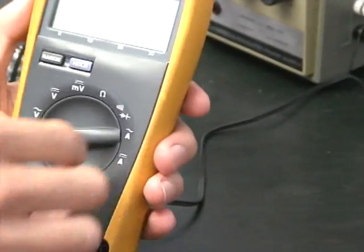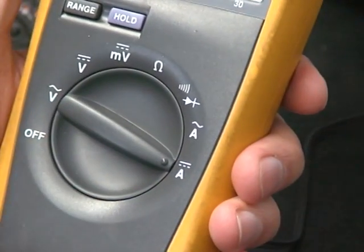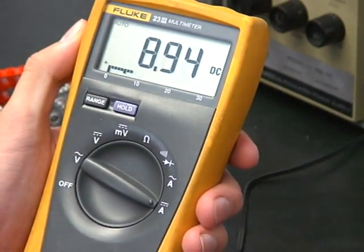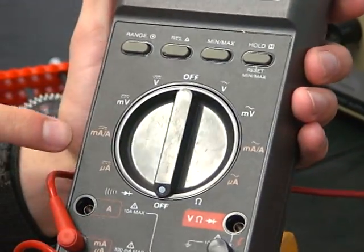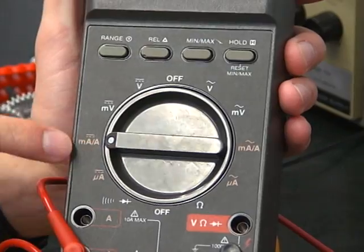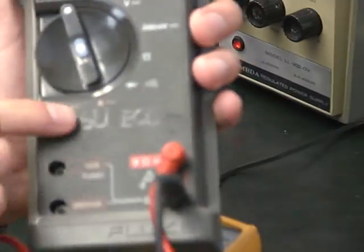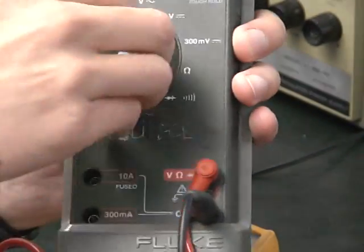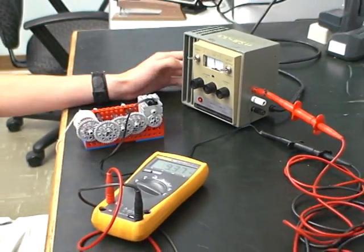And then for the dial setting, you want to set it to the A with the bar over the top. There we go. And so that will give you the current. On this one, it's microamps with the bar over the top. And then here, it's at the bottom, the A with the bar next to it. And so that is how you use a multimeter to measure voltage and current of the circuit.